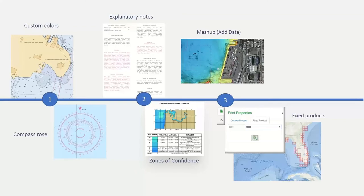We also have the concept of fixed products, because if you're letting people add whatever data they want, move the chart wherever they want, and make it whatever scale they want, it makes it harder to control the output. Many of our users asked for the ability to tightly control the output — users can only select specific red squares and only have a list of specific scales, which allows them to more tightly control the output.